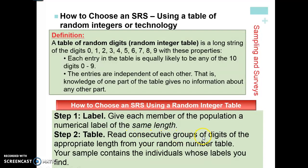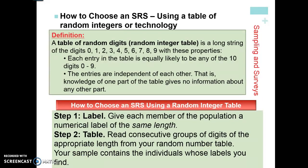You're going to read consecutive groups of digits of the appropriate length. Since we labeled everyone from 01 to 20, you're going to read the digits in groups of two. Your sample contains the individuals whose labels you find — so if you read 01 and 05, the people labeled 01 and 05 are in your sample.